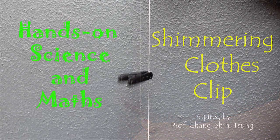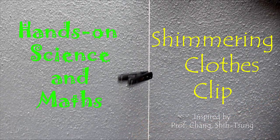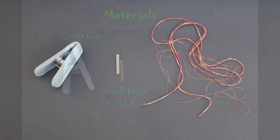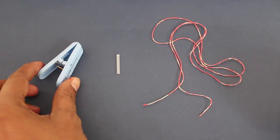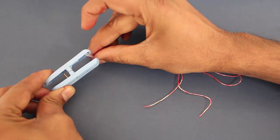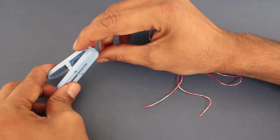To make the shimmering clothes clip, you need a plastic clothes clip, a small piece of old ballpen refill, and some thread. Take a two centimeter long old ballpen refill and clamp it in the clip.